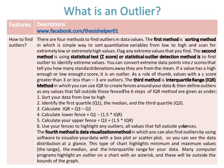The second method is the statistical test Z-score, or statistical outlier detection method. To identify extreme values, you can convert extreme data points into Z-scores that tell you how many standard deviations away they are from the mean.